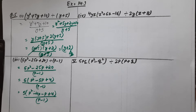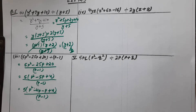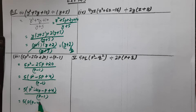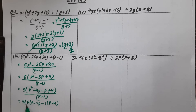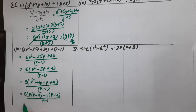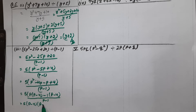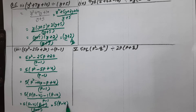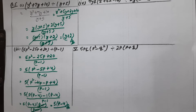Taking common from each group: 5 into p(p minus 4) minus 1(p minus 4), divided by (p minus 1). Now (p minus 1) cancels with (p minus 1), and we are left with 5 into (p minus 4), which is our answer.